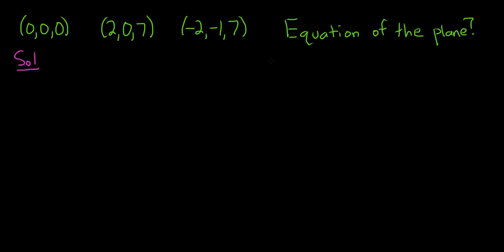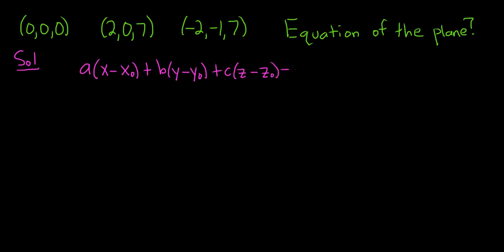The formula for the equation of a plane is: a(x minus x sub zero) plus b(y minus y sub zero) plus c(z minus z sub zero), and this is all equal to zero.